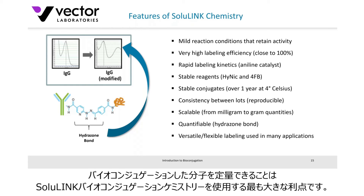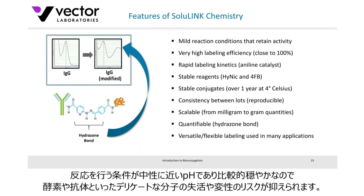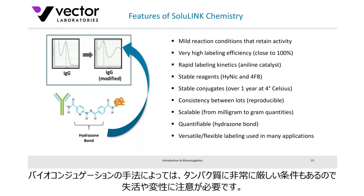One of the key benefits of SoluLINK chemistry is that you can quantify how much material is bound to your biomolecule. Other features include: reactions occur under relatively mild conditions — not at extremes of pH, not high alkalinity or very low pH. This is very important when working with delicate specimens, as you want to retain maximum binding activity. For antibodies especially, you want them to continue binding to their target antigen. Some other linking technologies can be rather harsh and you do lose activity.